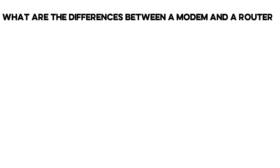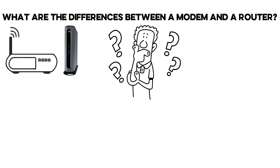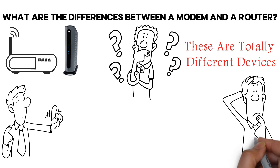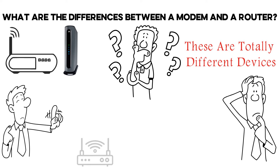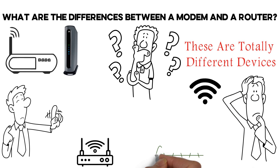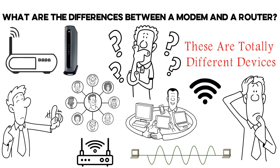What are the differences between a modem and a router? A router and a modem are not the same thing — these are totally different devices which are unfortunately often confused, although some of today's modems have the function of a router, such as organizing a home network you can connect to via Wi-Fi. A modem is first of all a signal translator, while a router is designed to distribute internet traffic to all connected devices nearby.